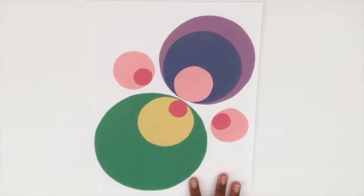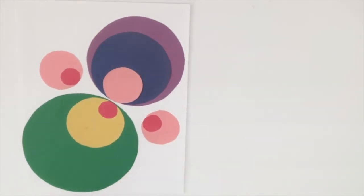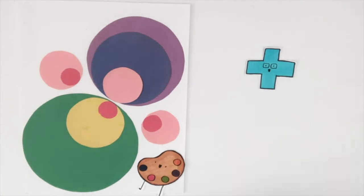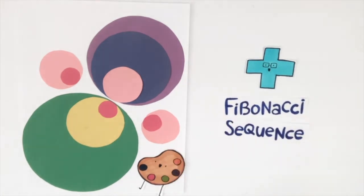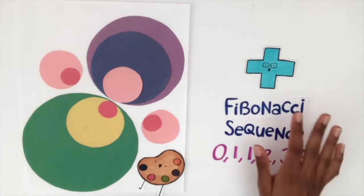But the most important part is that your art came from a mathematical concept, the Fibonacci sequence. Remember, we used the Fibonacci sequence to determine the radius of our circles. And using the circles we created, we were able to arrange them in a way that would make them look beautiful.